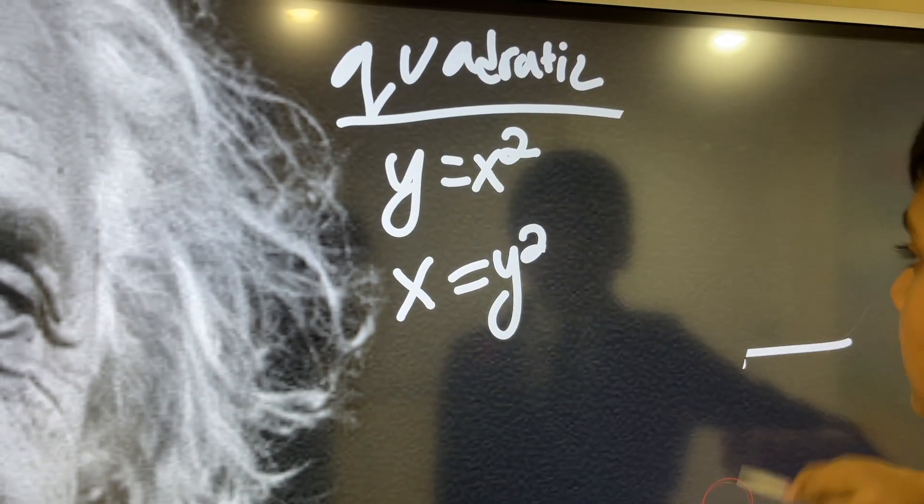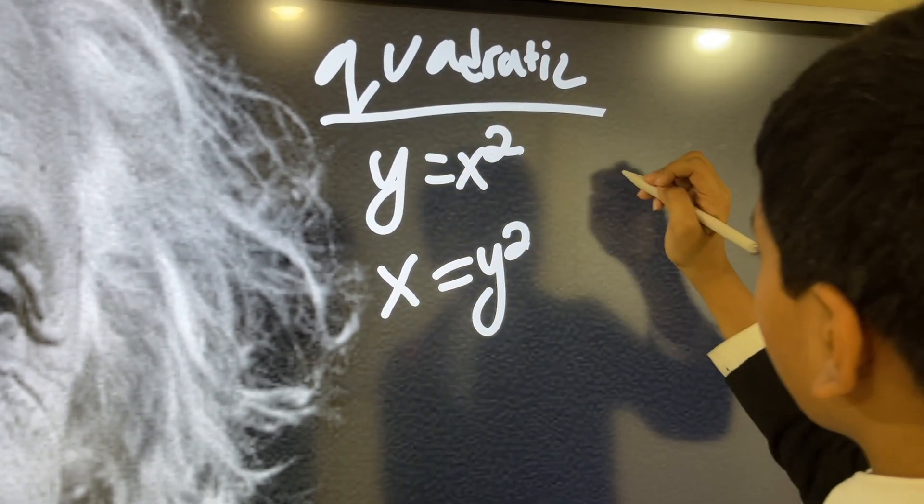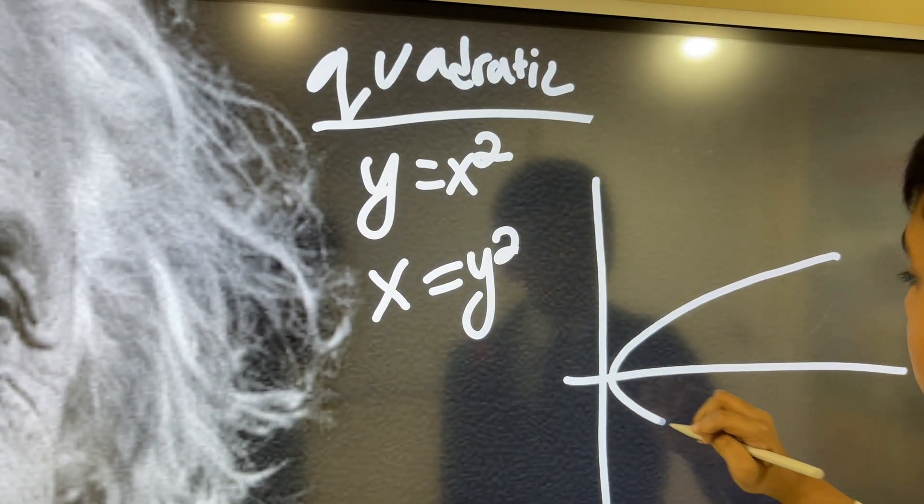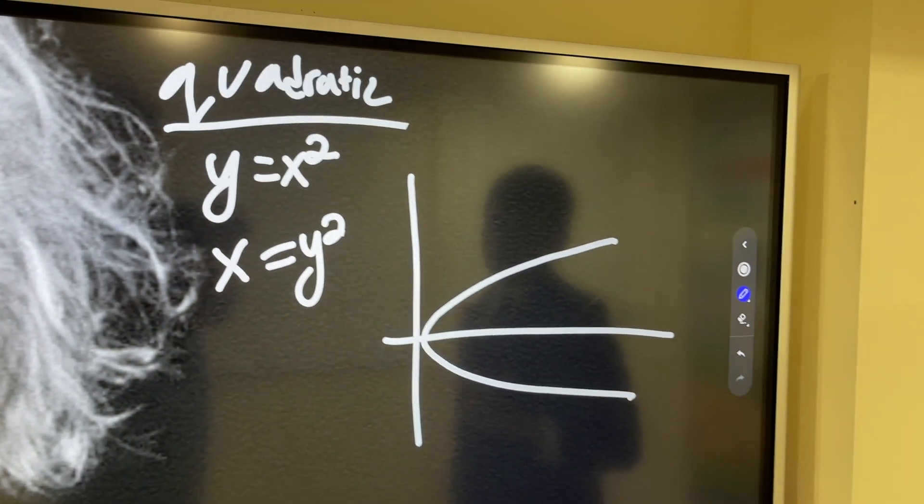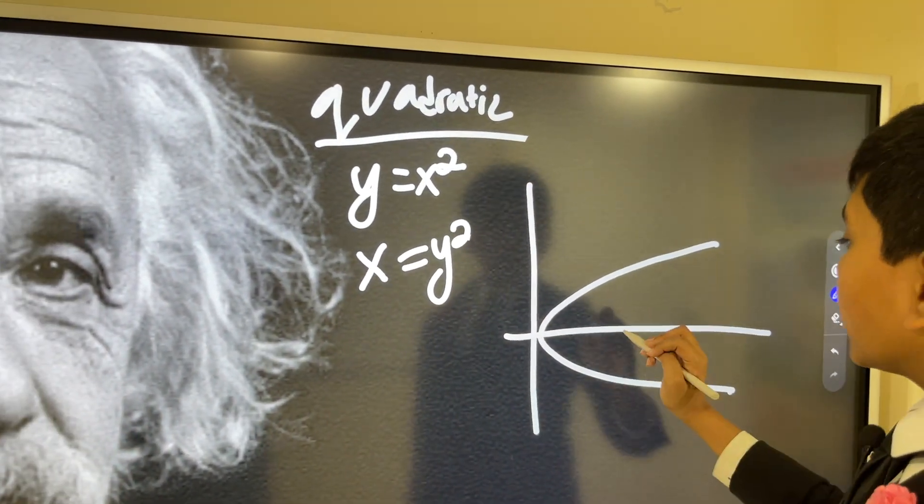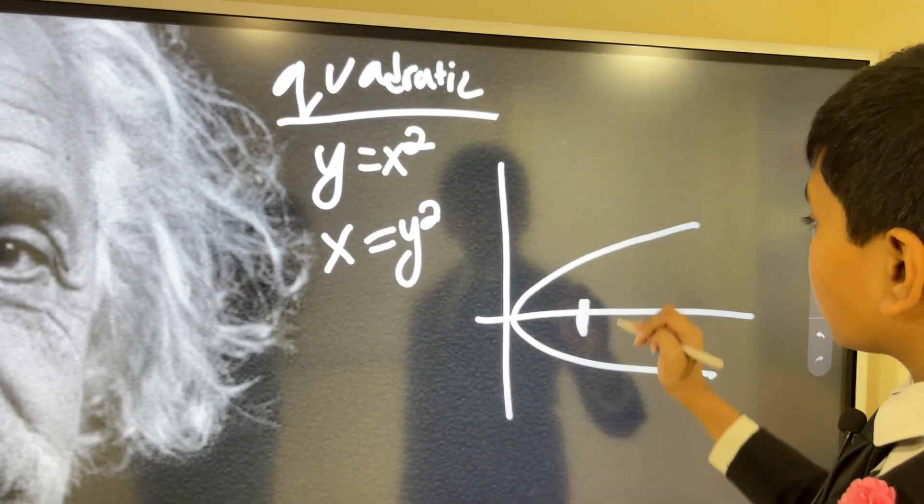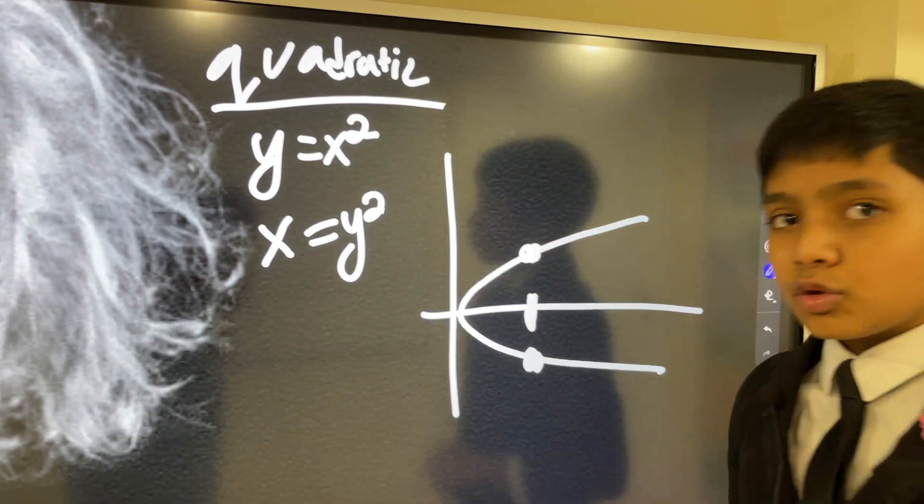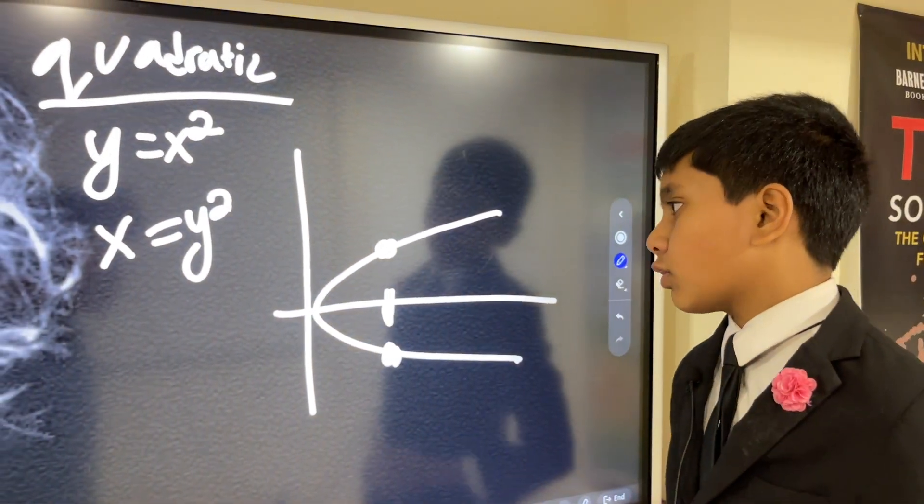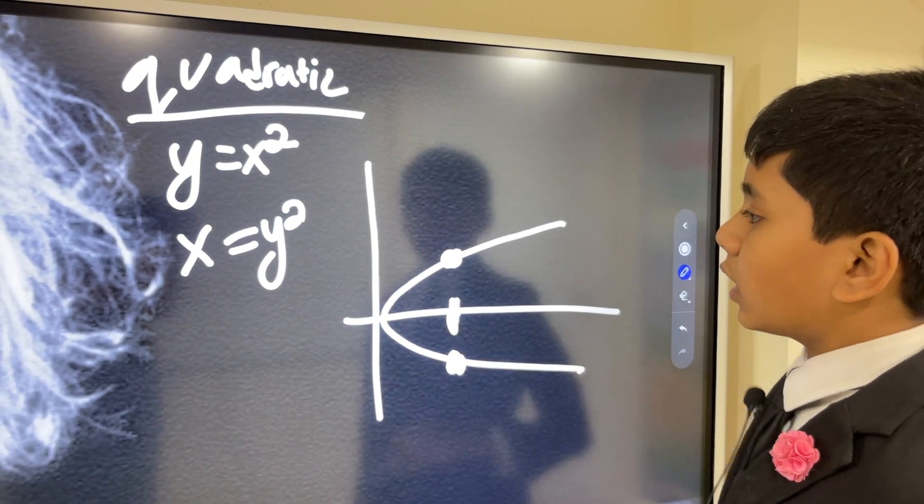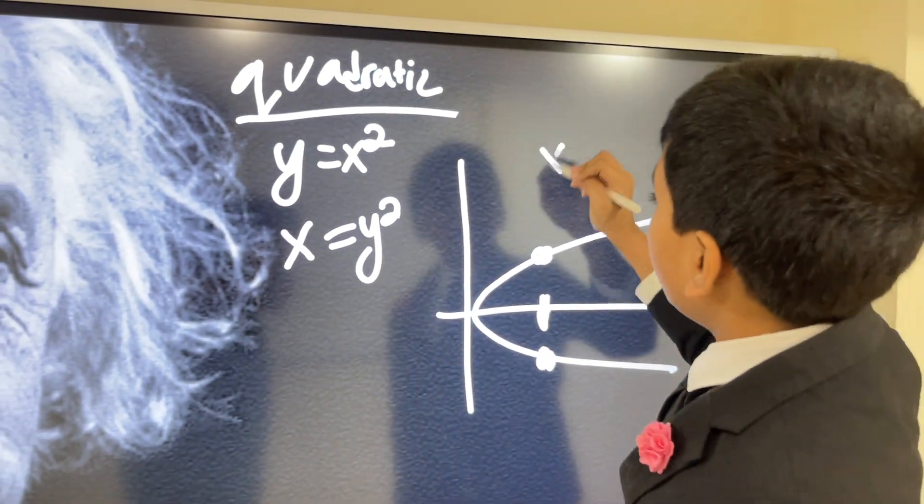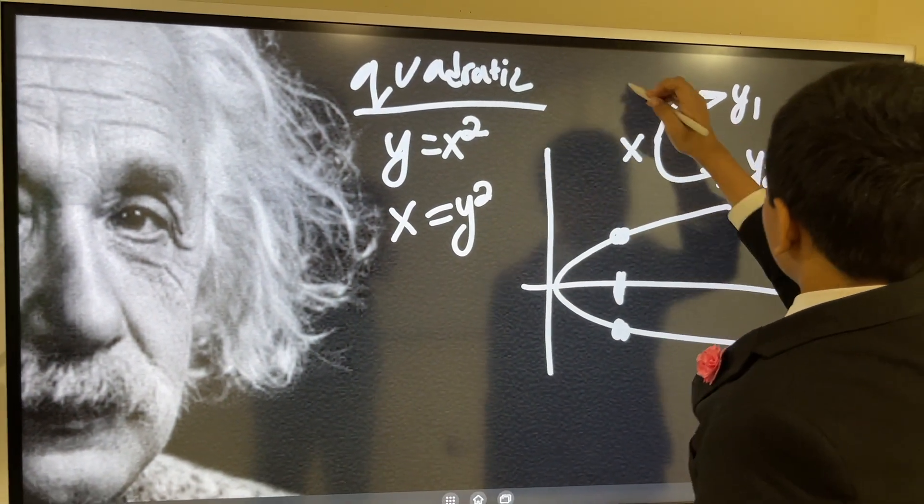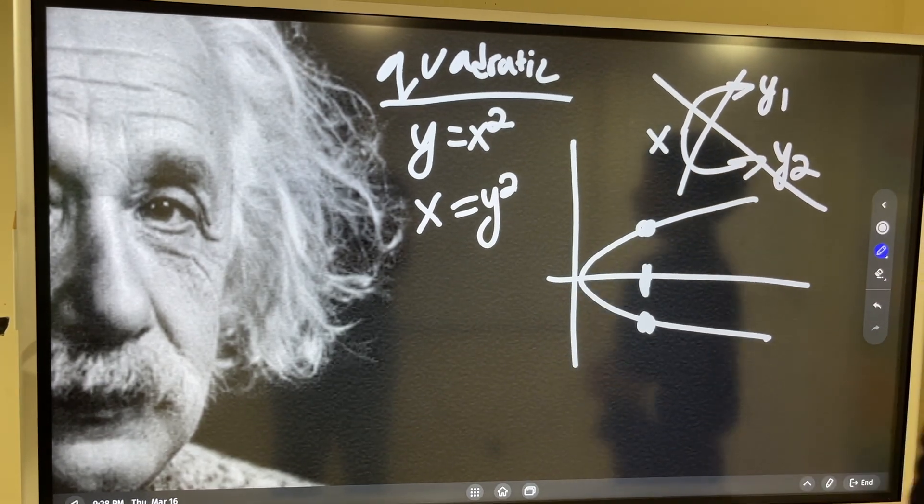However, x equals y squared is going to look something like this, and this is not a function, because for one input, like this here, we're going to get two outputs. One, two, two outputs aren't going to work for us, if that's just one input, because, as we said, one input with two outputs is not constituting a function.